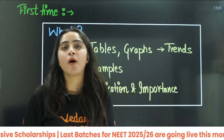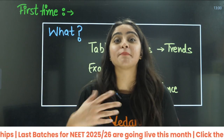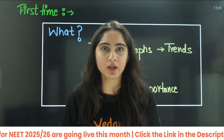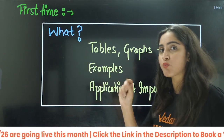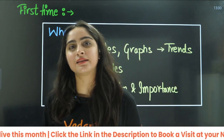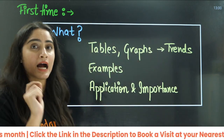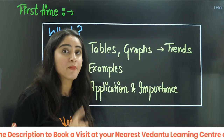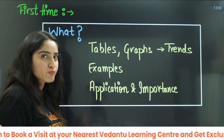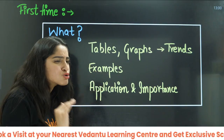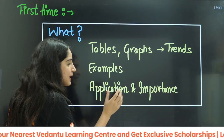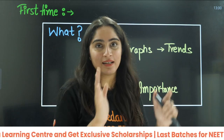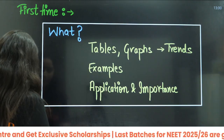When we talk about Conceptual Chemistry — Conceptual Inorganic Chemistry like Chemical Bonding and Coordination Chemistry — you need to understand what examples are given in that NCERT book. Direct examples will be asked in your NEET exam. Also, the main important point throughout chemistry is the application and importance sections given at the end, as well as the summary points.